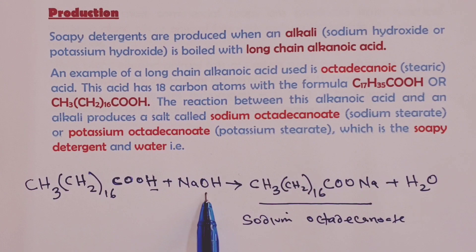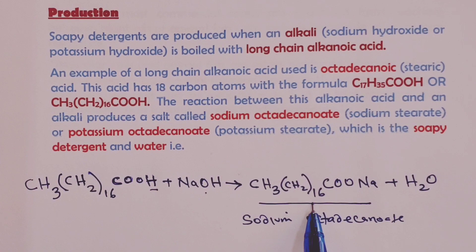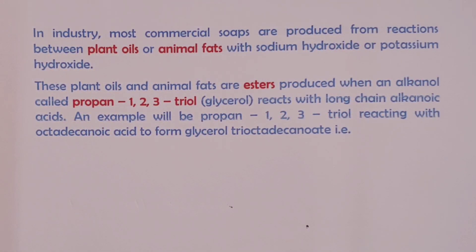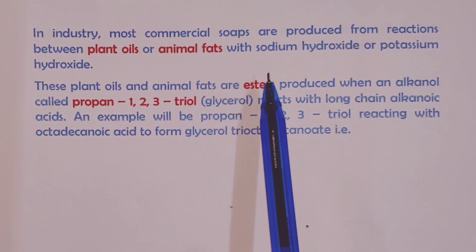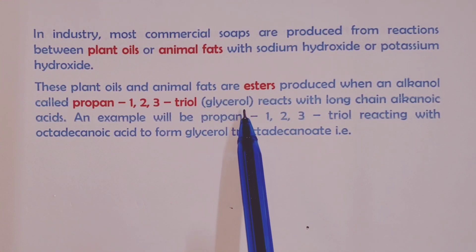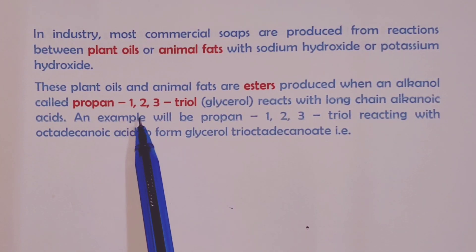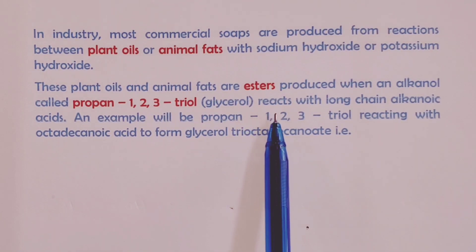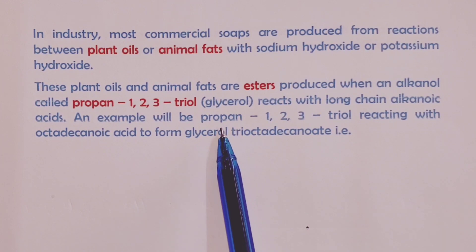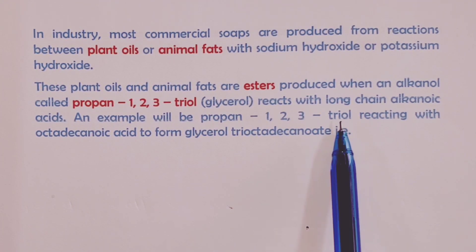This salt, sodium octadecanoate, is our soapy detergent. If you use potassium hydroxide instead of sodium hydroxide, you get potassium octadecanoate, which is also a soapy detergent. In industry the process is a little more complicated. Most commercial soaps are produced from reactions between plant oils or animal fats with our two alkalis. These plant oils and animal fats are usually esters produced when an alcohol we call propane-1,2,3-triol reacts with the acid.